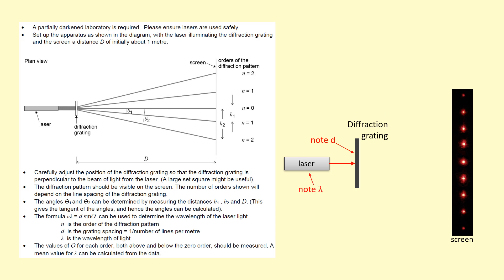After that, write down the laser's wavelength. You're also going to keep the distance to the screen constant, so you'll need to note that down as well — you'll be using it later.